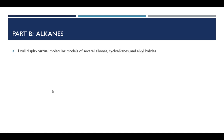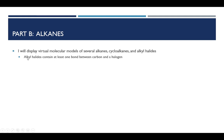For part B, I'm going to display some virtual molecular models using software that I have available to me. I will show these models of alkanes, some cycloalkanes, and alkyl halides, and will add a little bit of narration where needed to supplement this. Alkyl halides are compounds that contain one bond between carbon and a halogen — halogens being fluorine, chlorine, bromine, and iodine.